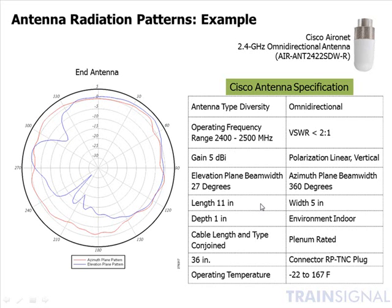The measurements here — length, width, and depth — give me the size of the antenna. This antenna is suitable for an indoor environment. Over here it's telling me the length of the cable and the type of connection — it's got a 36-inch connection. The longer the cable, the more loss, so the shorter the cable, the less loss I'll experience; I always want to keep that as short as possible, while still long enough to give flexibility for deploying the access point. This antenna is plenum-rated, so I can put it in a ceiling with airflow and it will be safe from a fumes perspective in fire conditions.